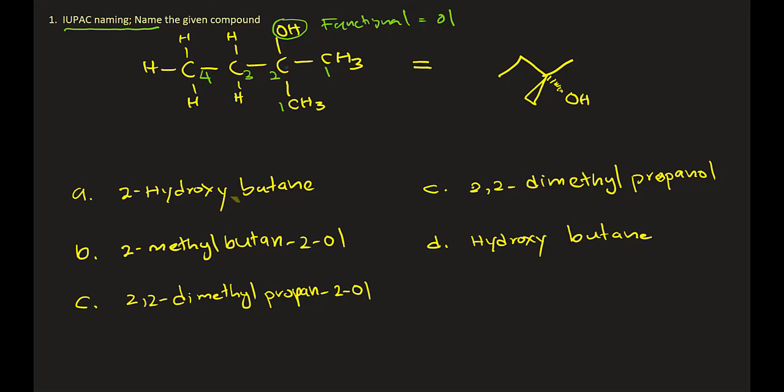There are two possible chains, but either one is fine. Let's mark the longest chain. Either one carbon is fine, the first carbon is fine. Now we know the second carbon has a hydroxyl group and the second carbon also has a methyl group.